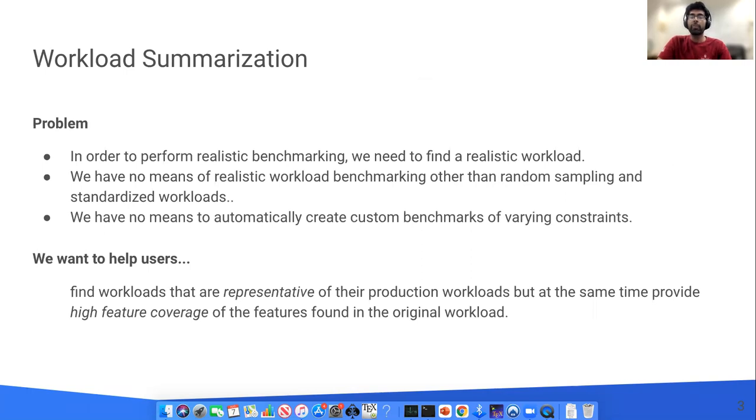The very first step to perform benchmarking is to identify what workload is used for benchmarking. However, currently the most common means of generating benchmark workloads is to either perform a random sample or use a standardized workload such as TPCH or SSP. Further, there is also no known technique on how we can create custom benchmarks to satisfy certain constraints, such as the running time of the workload. In this paper, we take the first step towards our overall goal of allowing users to find benchmarking workloads that are representative of their production workloads, but at the same time provide high coverage.